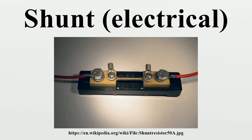Diodes are shunts. Where devices are especially sensitive to reverse polarity of signal or power supply, a diode may be used to protect the circuit. If connected in series with the circuit it simply prevents reverse current, but if connected in parallel it can shunt the reverse supply, causing a fuse or other current limiting circuit to open.